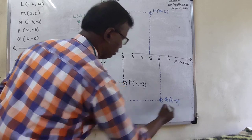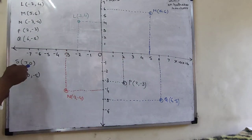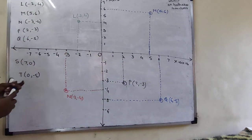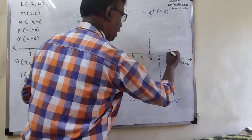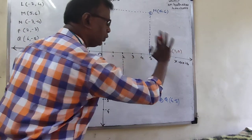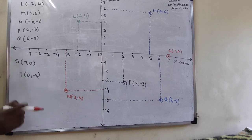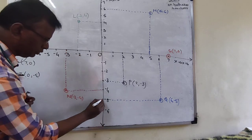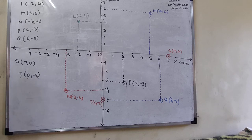Now, S(7, 0). Whenever zero comes, the point will be on the axis. Here the y-coordinate is zero, so the point is on the x-axis. Mark S at 7 on the x-axis. Next, T(0, -5) — the x-coordinate is zero, so the point is on the y-axis. Mark T at -5 on the y-axis. You have to draw all these points on the graph paper.